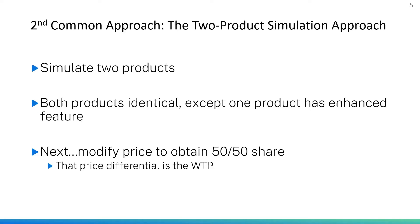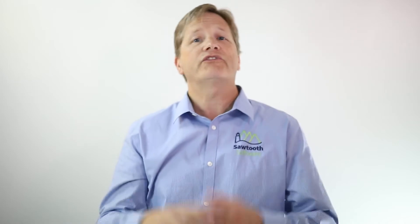The second approach used in the industry for decades is called the two-product simulation approach, in which we build a market simulator using your conjoint analysis study. We assume there are just two products in the marketplace, initially identical, so they get 50-50 share. We then modify one product to improve its feature, giving it higher share, and adjust the price for that enhanced product to drive its share back to 50%. That price difference is taken as willingness to pay. The results of this approach are very similar to the algebraic approach and tend to be too high.